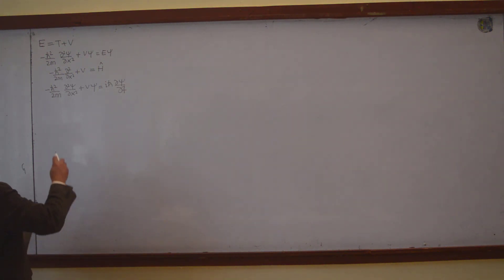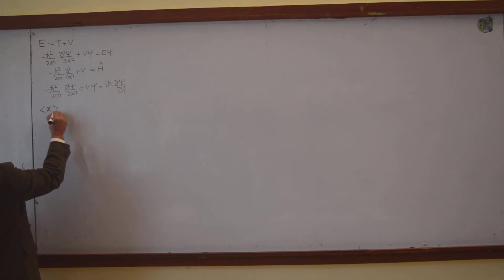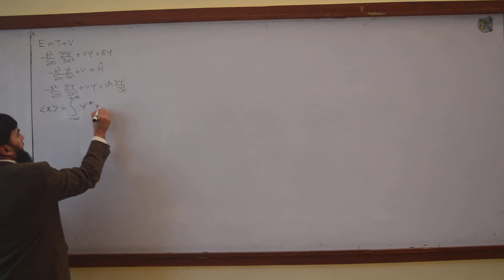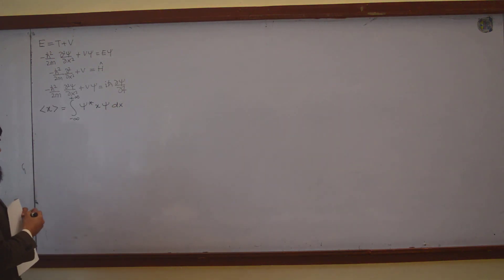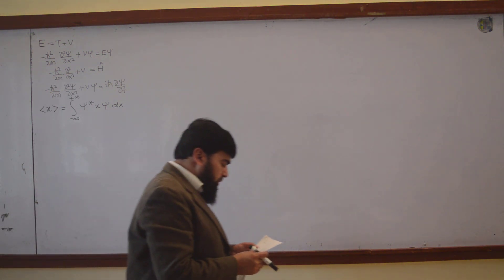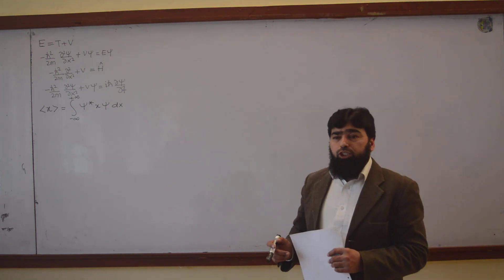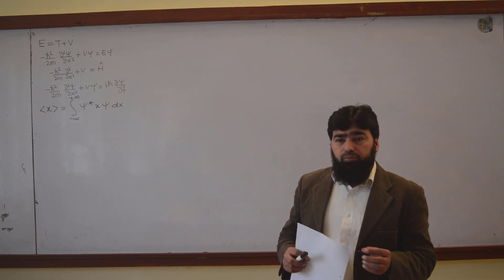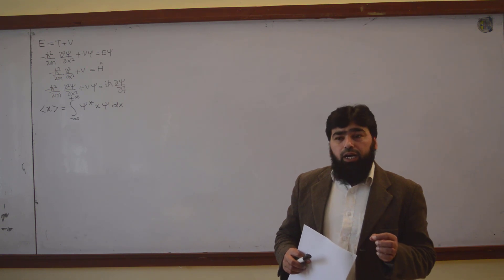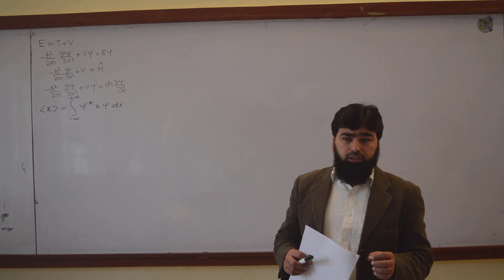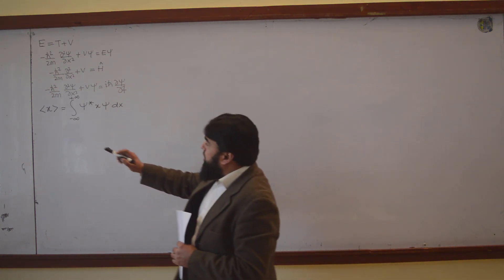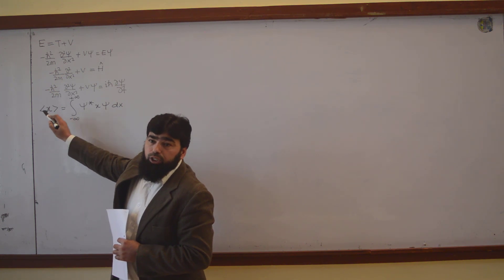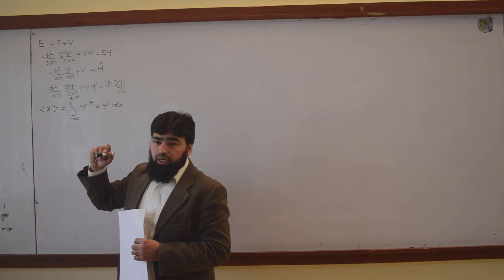So far we have proved that the expectation value — for example, the expectation value of x — is the integral from minus infinity to plus infinity of ψ* x ψ dx. About expectation value, you have to be clear on one thing: the expectation value is the average value of all the measurements on the same system. It is not the average of repeated measurements on one system; it is the average of each individual measurement on a separate, identical system.